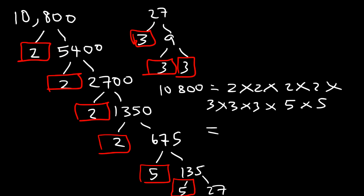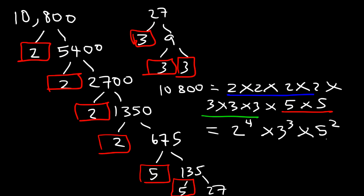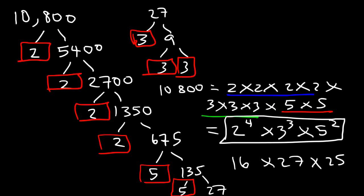Now let's write it using exponents. There are four 2s, so that's 2 to the 4th power. We have three 3s, so that's 3 to the 3rd power. And there are two 5s, so that's 5 squared. You can verify in a calculator: 2 to the 4th is 16, 3 to the 3rd is 27, and 5 squared is 25. Multiply those three numbers and you get 10,800. So the prime factorization of 10,800 using exponents is 2 to the 4th times 3 to the 3rd times 5 squared.